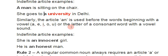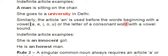Similarly, the article 'an' is used before words beginning with a vowel — a, e, i, o, u — or any consonant letter that has a vowel sound. Remember, it doesn't matter whether the letter is a consonant or vowel; what matters is the first sound. If the first sound is a vowel sound, we use 'an'.